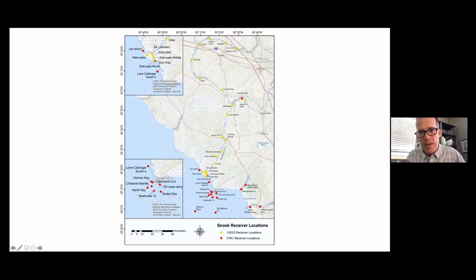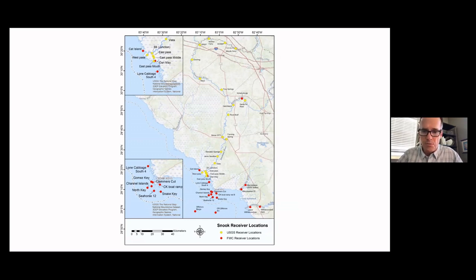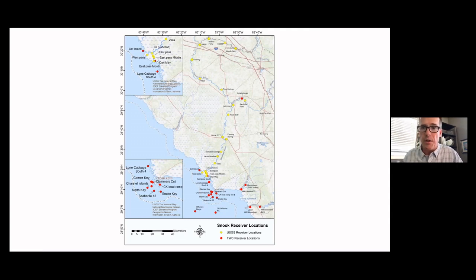The yellow dots on our receiver map are the array that USGS scientists use for gulf sturgeon — they also hear our fish — and the red dots are receivers we've put out for snook. These are listening stations running all the time. We download data a few times a year and get a record of which receivers have recorded our fish. We have snook receivers down near the Withlacoochee, around Cedar Key, and the gulf sturgeon receivers go well up into the Suwannee River. We have snook all the way up well north into the Suwannee River.